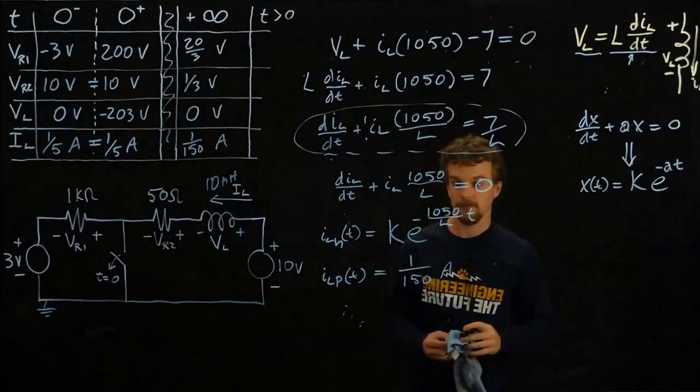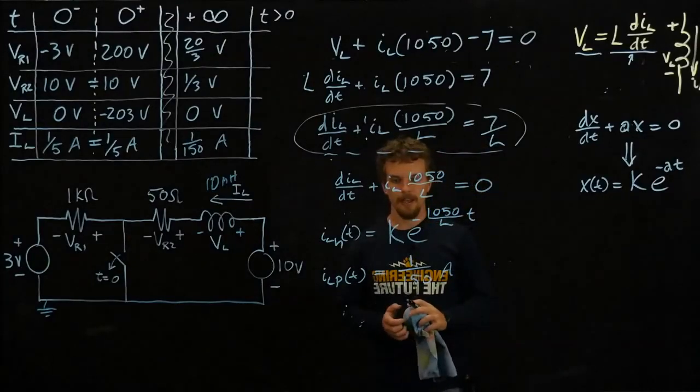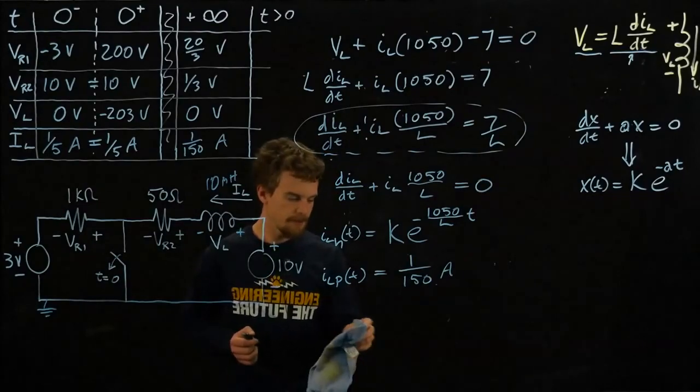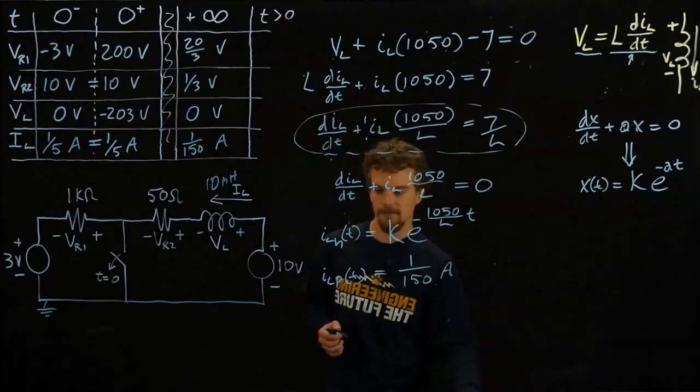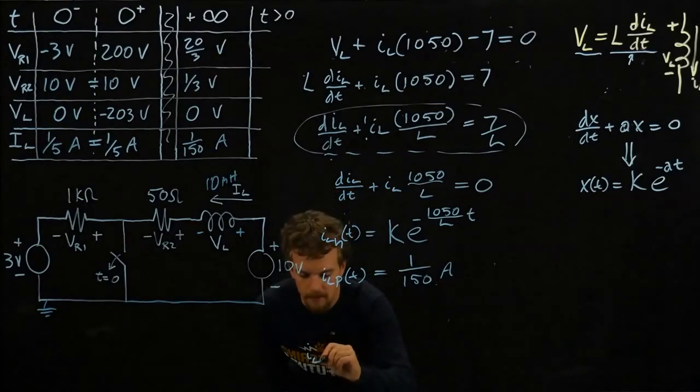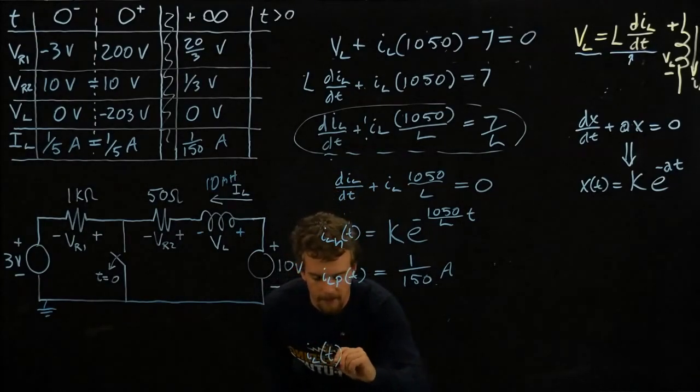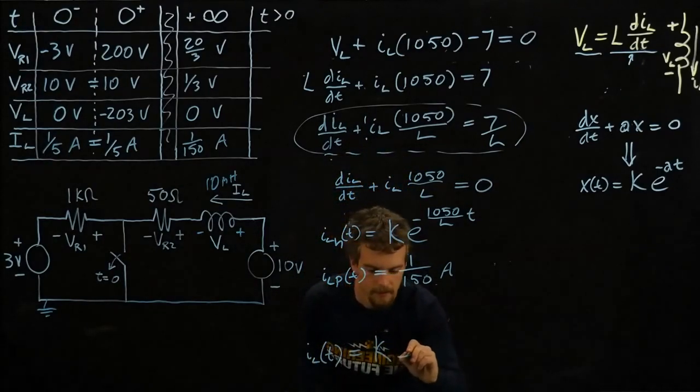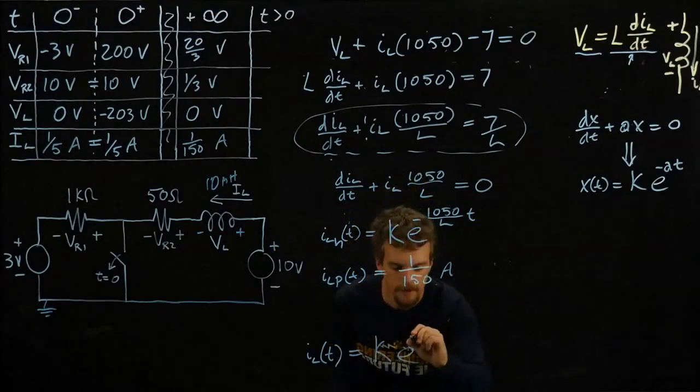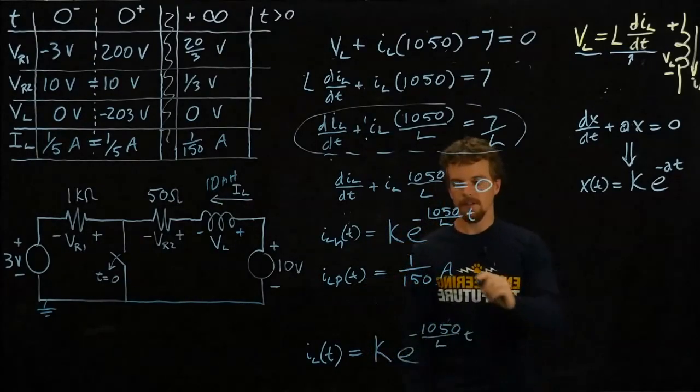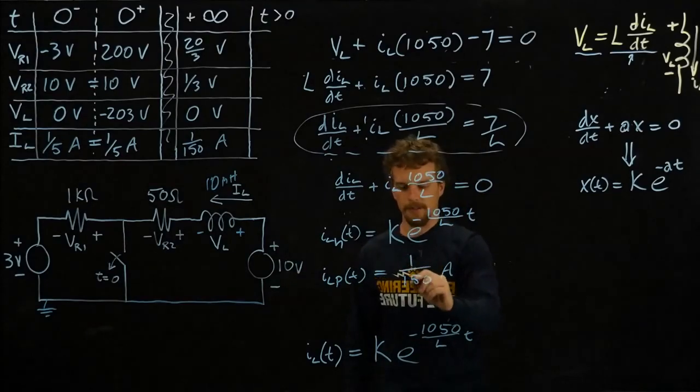Okay, so now we can get a general solution for IL by adding the particular and homogeneous solutions. So we have that IL for all time greater than zero is equal to k times e to the negative 1050 over L times t, plus 1 over 150. So this is our homogeneous solution plus our particular solution.